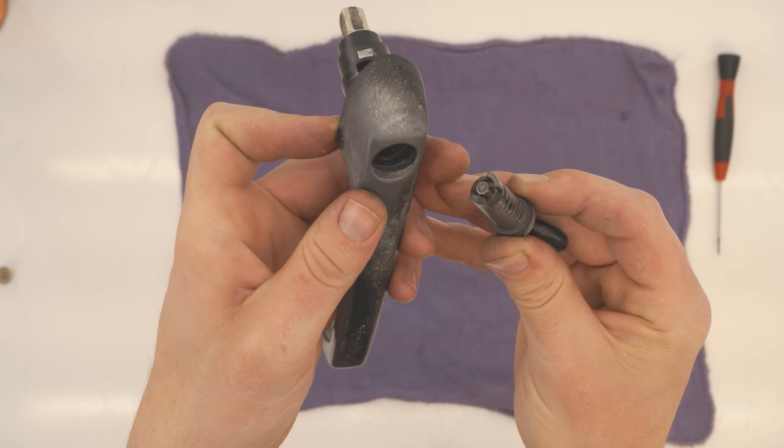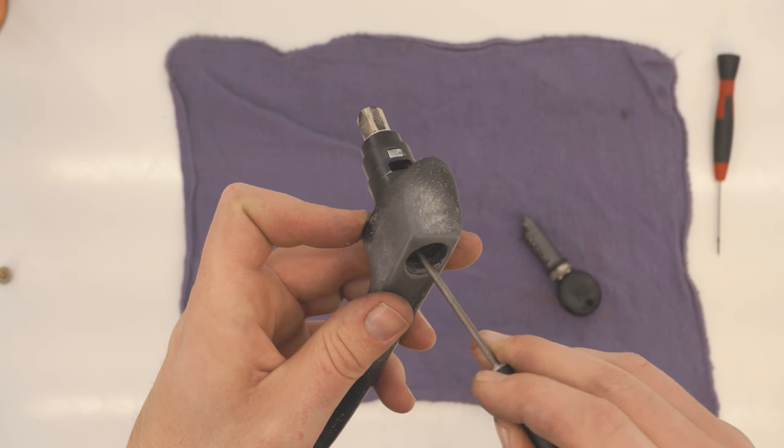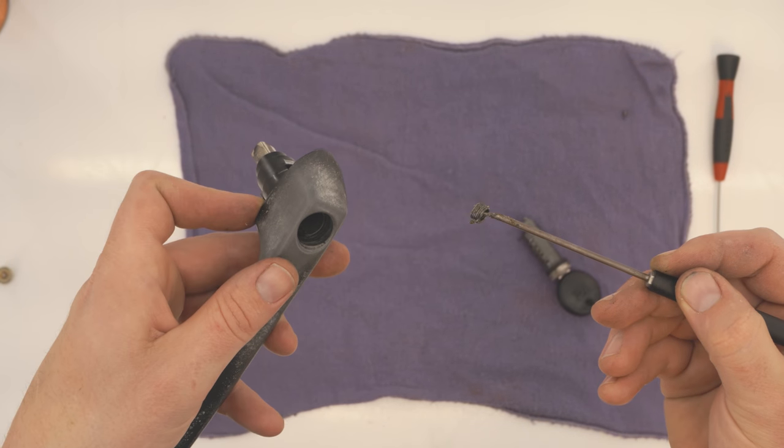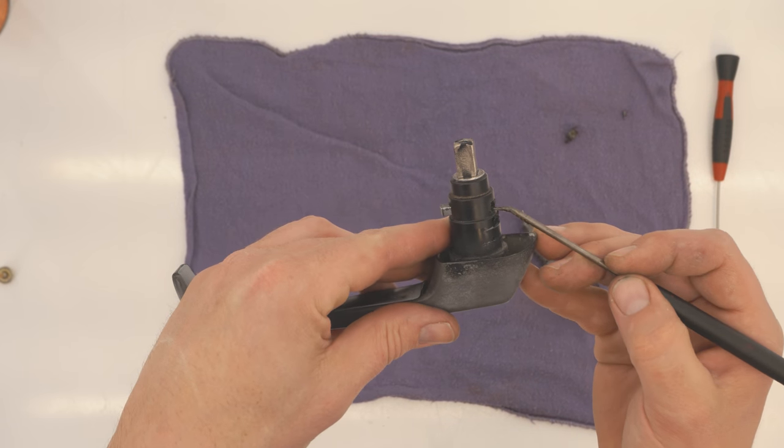You can, however, clean the cylinder and tumblers fairly well with the key still inserted. There's a spring that should come out with the tumbler if it doesn't. You'll also want to remove this bar.